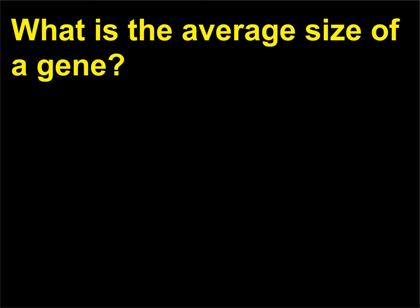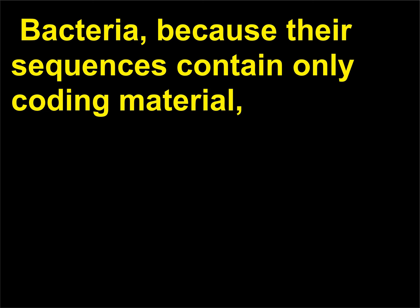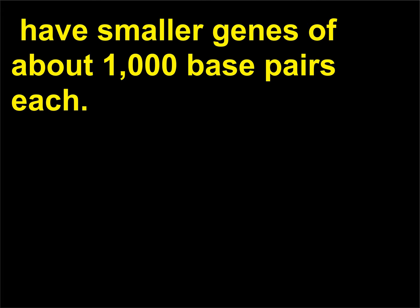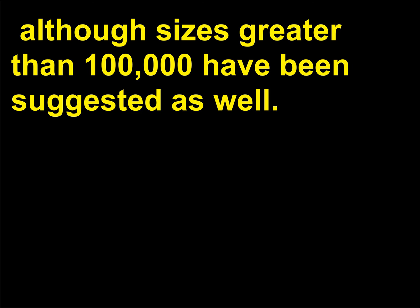What is the average size of a gene? The average size of a vertebrate gene is about 30,000 base pairs. Bacteria, because their sequences contain only coding material, have smaller genes of about 1,000 base pairs each. Human genes are in the 20,000 to 50,000 base pairs range, although sizes greater than 100,000 have been suggested as well.